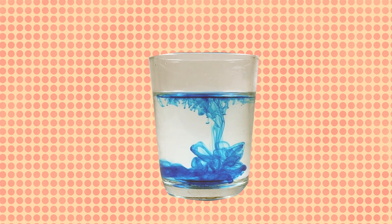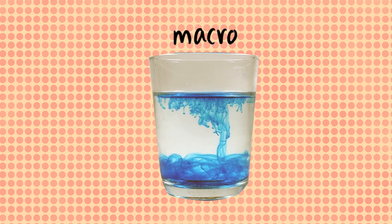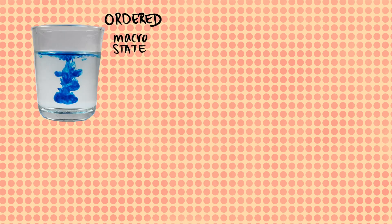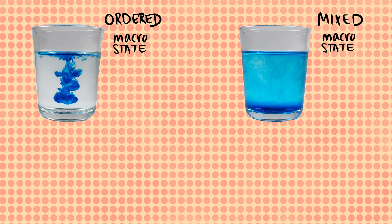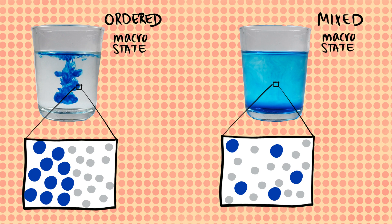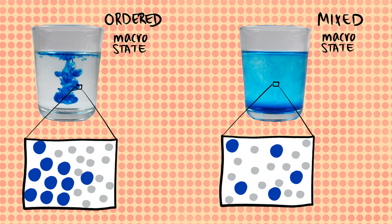Ink mixing in water. Let's first look at its large-scale properties, or what physicists call its macroscopic state. Consider two snapshots: one in which the system is in an ordered macroscopic state, and a second one in which the system is completely mixed. To grasp the meaning of entropy, let's zoom in and look at the system as a large collection of tiny particles — water molecules and pigment particles. In the initial ordered state, if we swap either two pigment particles or two water molecules, the overall order of the system is not affected.